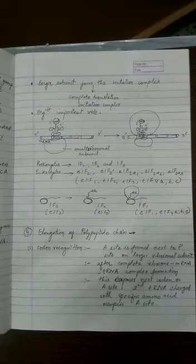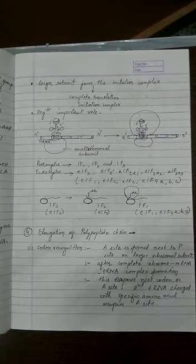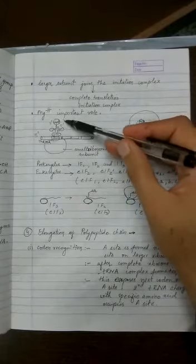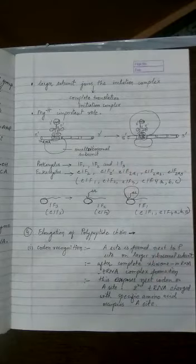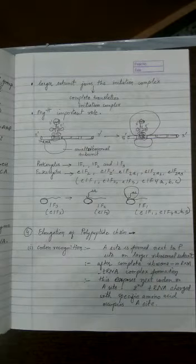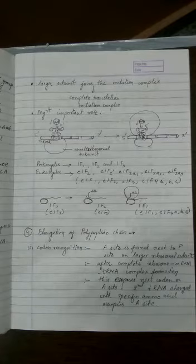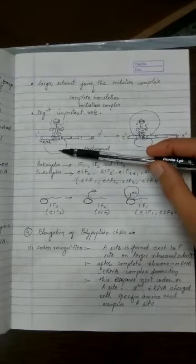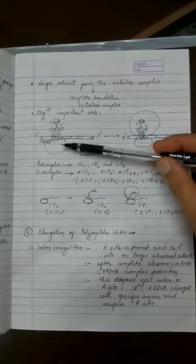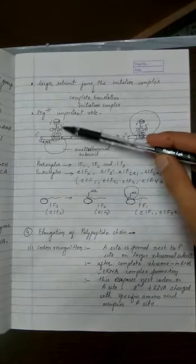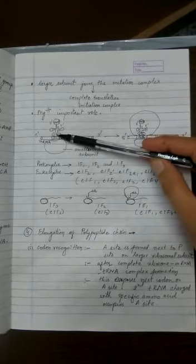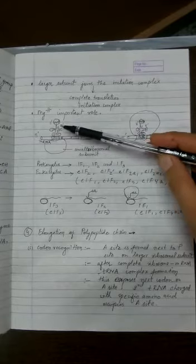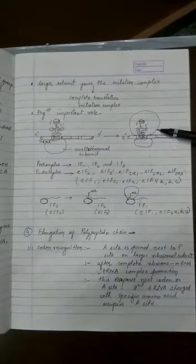The first codon or initiator codon is always AUG, so the initiator anticodon will always be UAC. That's why this is called the initiator tRNA — a tRNA which has UAC from 3' to 5' is called the initiator tRNA. This messenger RNA interacts with the smaller subunit in the presence of initiation factors and magnesium ions, and then the first tRNA, which always carries UAC and methionine, will join. After this, only the larger subunit will join.